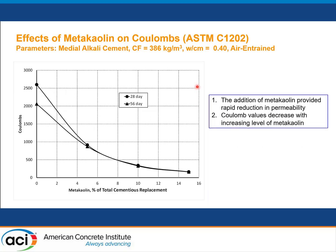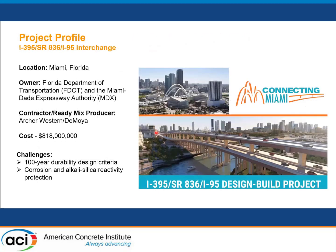These results show the effect of MetaKaolin on chloride permeability based on ASTM C1202, using a similar mix design as shown for the compressive strength. We measured chloride permeability at 28 days and 56 days, with three levels of MetaKaolin replacement: 5%, 10%, and 15%. The results indicate that adding MetaKaolin provides a very quick reduction in permeability, and the coulomb values decrease with increasing levels of MetaKaolin replacement. So based on what we see in the lab, MetaKaolin enhances ASR mitigation, enhances strength development, and reduces chloride permeability.